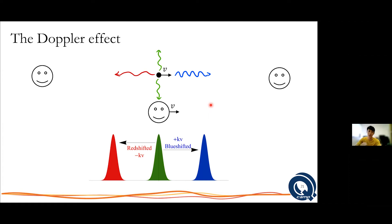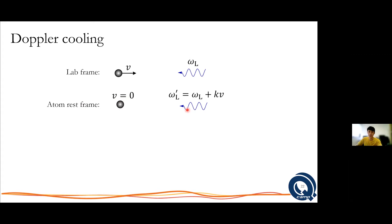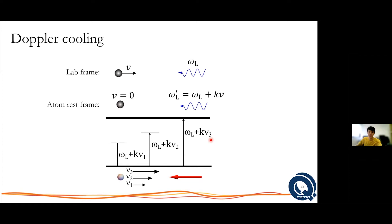If we are the atom looking at some light source, you can consider the lab frame, then transform to sit on the atom. You don't see any velocity on the atom, but the frequency of the photon is shifted by kv. This poses a significant problem: we started with some velocity, but the moment we slow down, we see a different frequency, so we are out of resonance, and the scattering force vanishes. The moment you shine the laser on the atom, they feel the force and then they don't feel it anymore.